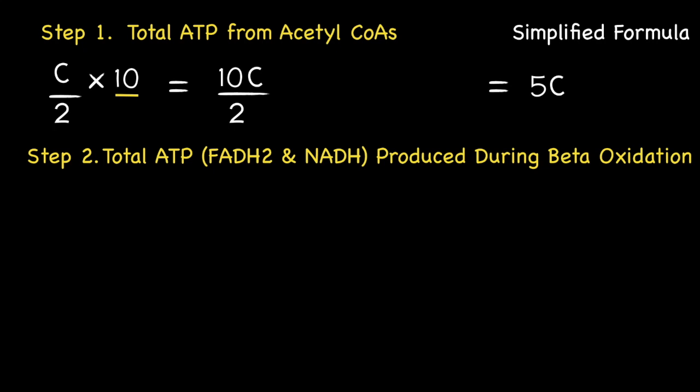Next, let's write a mathematical expression for calculating the total ATP from all the reduced coenzymes produced from all the beta-oxidation cycles. Where C over 2 minus 1 represents the total number of beta-oxidation cycles. Again, please refer to my video titled beta-oxidation part 1 for an explanation of why this is so. While the number 4 represents the total number of ATPs produced per cycle from the reduced coenzymes.